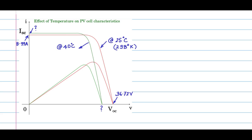The peak power for the curve at standard temperature and insolation is given as 240 watts peak for this particular cell in the data sheet. We need to estimate the peak power value for the curve representing 40 degree centigrade. Replacing the question marks by meaningful variables, we need to estimate the short circuit current, the peak power, and Voc at 40 degree C.